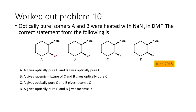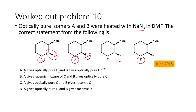Let us move on to the next problem. This is a more complex problem: optically pure isomers — compound A and compound B — are treated or heated with sodium azide in dimethylformamide. The correct statement from the following: the bromine is replaced by the azide group. Products C and D are going to be formed. The options are: A gives optically pure D and B gives optically pure C; A gives racemic mixture of C and B gives optically pure C; A gives optically pure C and B gives racemic C; or A gives optically pure D and B gives racemic D.